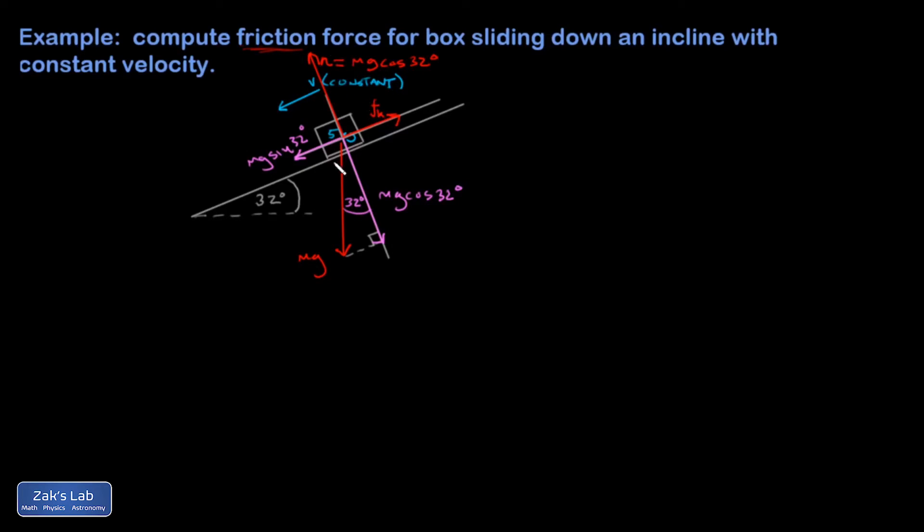Okay, so our force analysis is done in the perpendicular direction because we figured out the normal force is mg cosine 32. In the parallel direction, I know that the net force has to be equal to zero, otherwise there would be an acceleration.